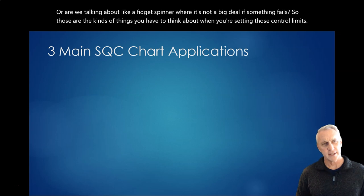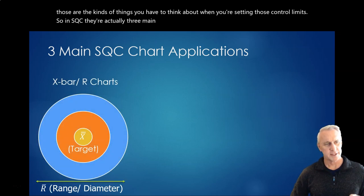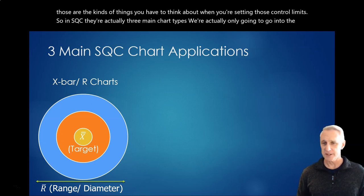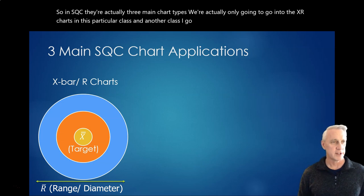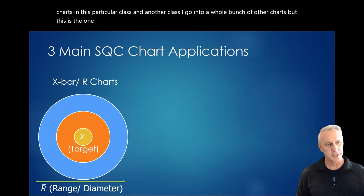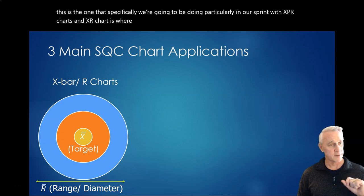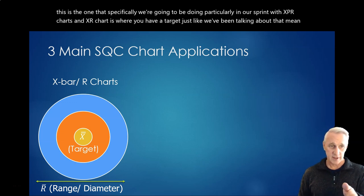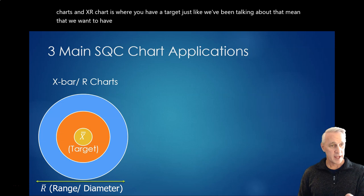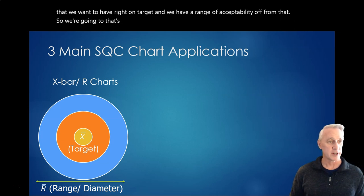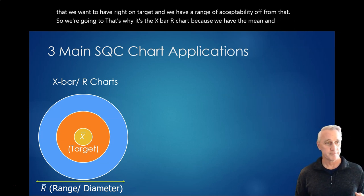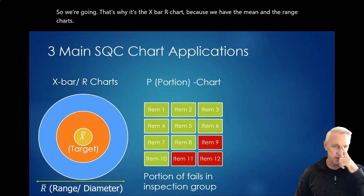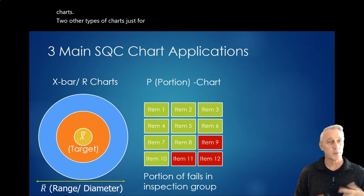So, in SQC, there are actually three main chart types. We're actually only going to go into the X bar R charts in this particular class. In another class, I go into a whole bunch of other charts. But this is the one that specifically we're going to be doing, particularly in our sprint with X bar R charts. And an X bar R chart is where you have a target, just like what we've been talking about, that mean that we want to have right on target. And we have a range of acceptability off from that mean. So, that's why it's the X bar R chart, because we have the mean and the range charts.